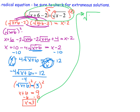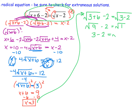Substituting x = 3 into the original equation: the square root of 3 plus 6 minus 2 equals the square root of 3 minus 2. This becomes the square root of 9 minus 2 equals the square root of 1. The square root of 9 is 3, so 3 minus 2 equals 1, giving us 1 equals 1, which is correct. So x equals 3 is a real solution and is not extraneous. Even with extra terms, we just need careful distribution and may have to square two separate times to fully solve the equation.